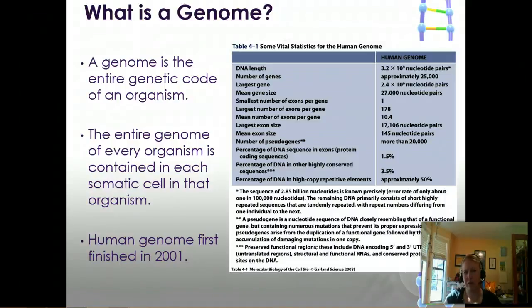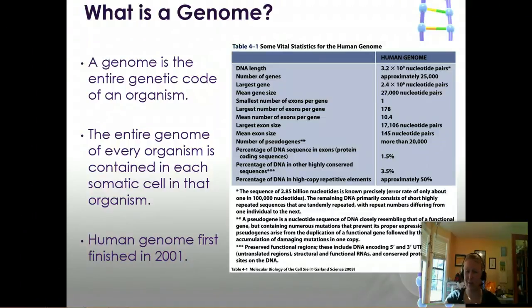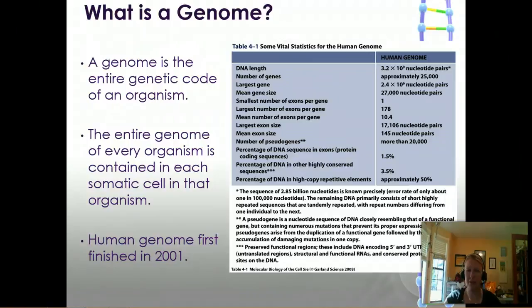Something else we also learned is that most genes average about 27,000 nucleotide pairs long. There are some that are short and some that are long, but that's the average length, and that was pretty interesting.